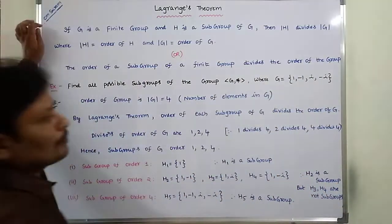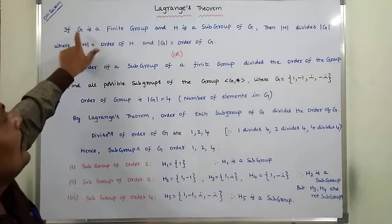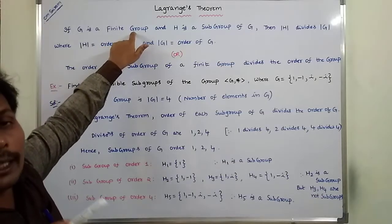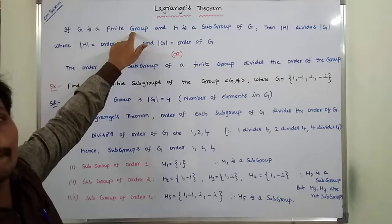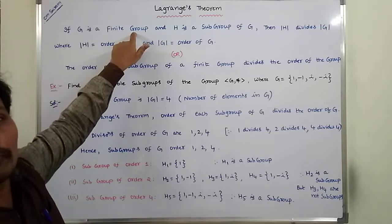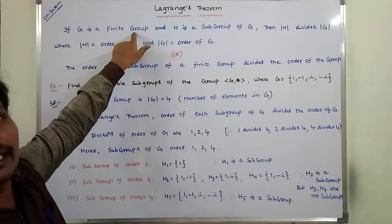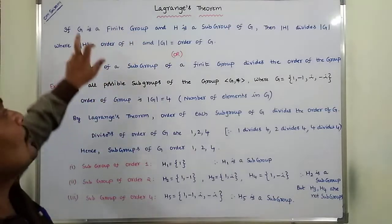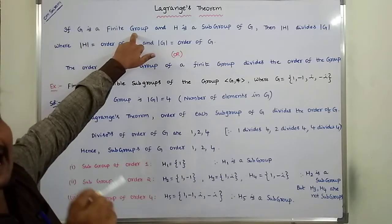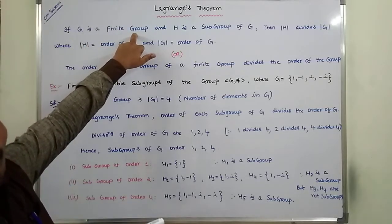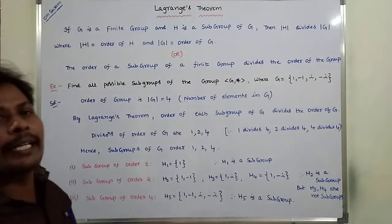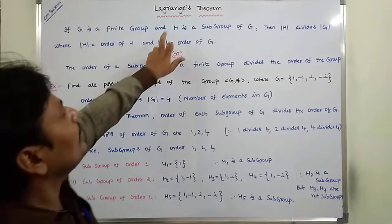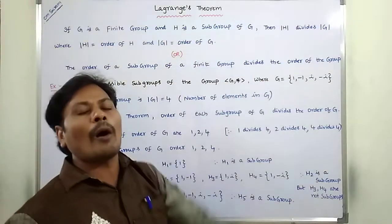So what is Lagrange's theorem? Here, if G is a finite group — G is one group — it satisfies four properties: closure property, associative property, identity property, and inverse property. So G is a finite group means G satisfies these four properties with respect to the binary operation, either star or plus. And H is a subgroup of G.